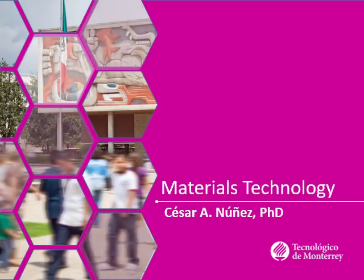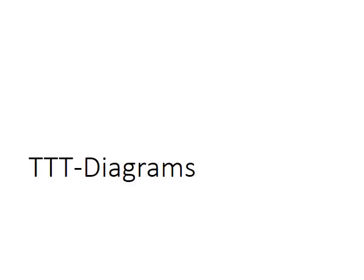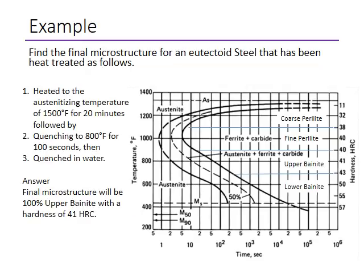Welcome back. We have started with the TTT diagrams and now we'll see some examples about their use. The first example asks to find the final microstructure for a eutectoid steel that has been heat treated as follows. The first step is heating to the austenizing temperature for 20 minutes — this is essential to ensure we are starting with 100% austenite.